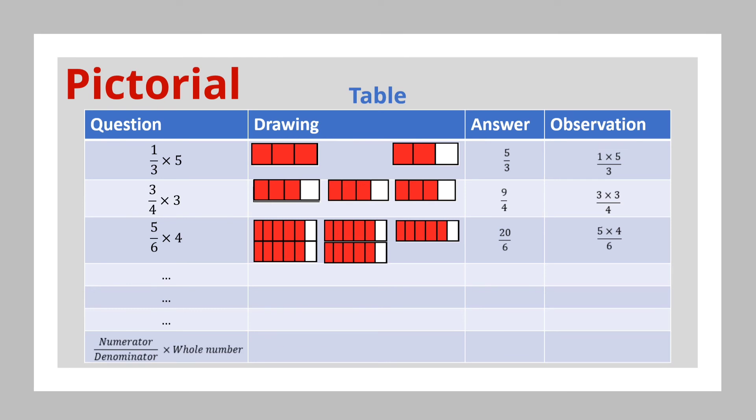If you were given the numerator over the denominator and you were asked to multiply this by the whole number, the process used in getting the product will be the numerator times the whole number divided by the denominator. This process helps the child to develop the algorithm on his own, that is the algorithm of multiplying a fraction by a whole number.